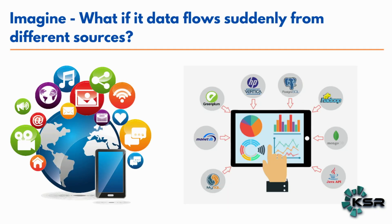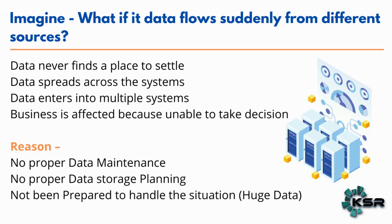Now, what if suddenly data flows from different systems? We are all in the digital world where we get data from different systems. Every day you are generating data — you use social media apps, YouTube, interacting with friends. Whatever you are doing on a daily basis, data is getting generated. Just like a rain, if data also flows into your system suddenly, there will be a problem. Your data will never find a place to settle and will spread across different systems. You won't know where the data is coming from or where it is stored, and your actual business will get affected.